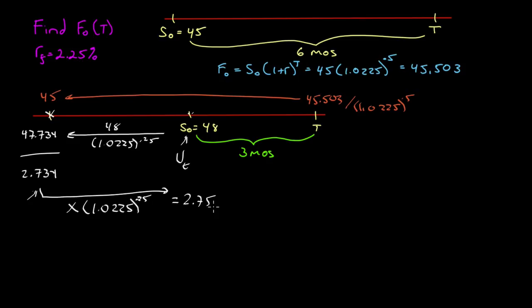Now we're going to take a difficult question from Level 2 about bond futures. That's a little bit tricky because you have an underlying, a futures price on an underlying, and then a quoted futures price. I'm going to show you three different ways to solve it — all without using any formulas or notation whatsoever — just by drawing a timeline and putting money at different points, then moving it around until everything is at the same point in time.